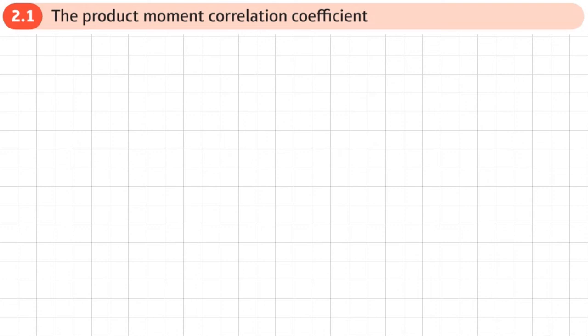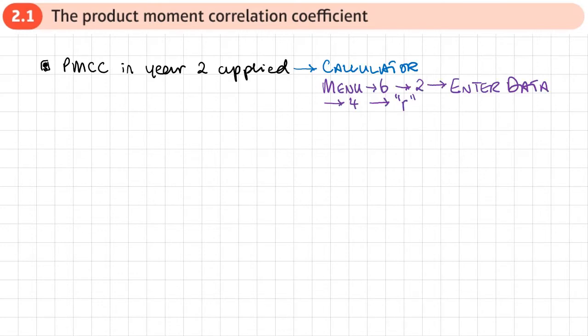This is the first section of chapter two, covering the product moment correlation coefficient (PMCC). You would have come across the PMCC in year two of applied, where you used your calculator to work it out.